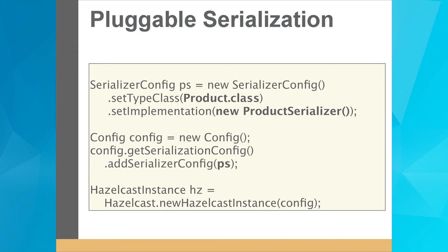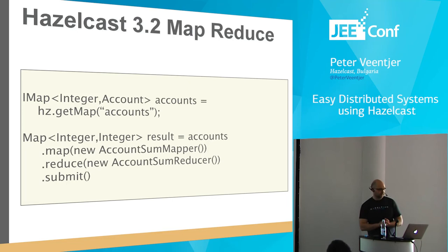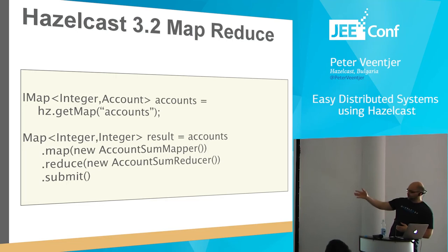One of the new features of Hazelcast 3.2 is the MapReduce implementation. For example, if you want to aggregate data on your map — in this case I want to do a sum of balances of all my accounts — I call accounts.map(new AccountsSumMapper()).reduce(accountsSumReducer) and get back the sum of all balances.